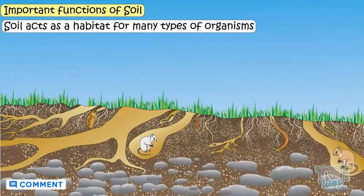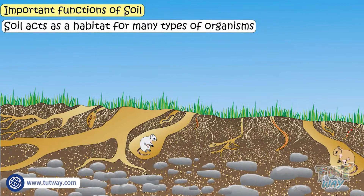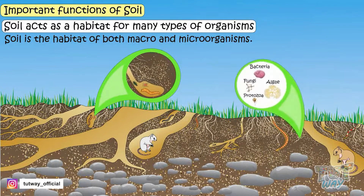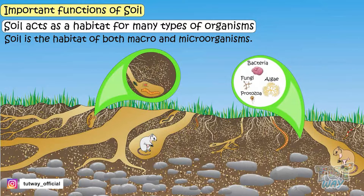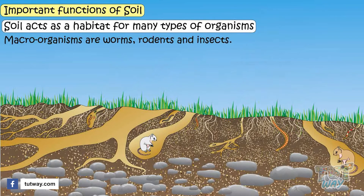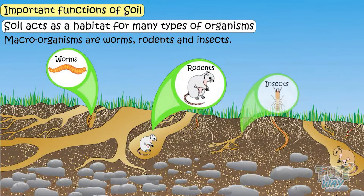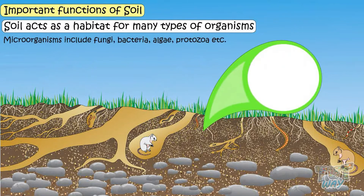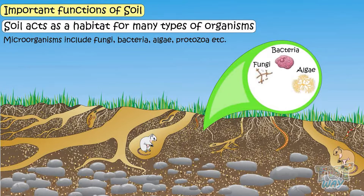Soil acts as a habitat for many types of organisms. Soil is the habitat of both macro and micro organisms. Macro organisms are worms, rodents, and insects. Micro organisms are fungi, bacteria, algae, and protozoa, etc.